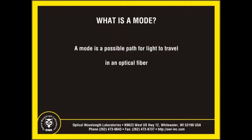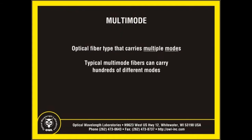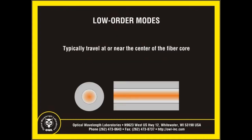For clarification, a mode is simply a possible path that light can travel in an optical fiber. Multimode, as the name implies, carries multiple modes, usually numbering in the hundreds. Some of these modes are useful for transmitting light, and others are not. Light traveling in low-order modes is useful because it travels at or near the center of the fiber core, and is thus more likely to travel the full length of the fiber link.